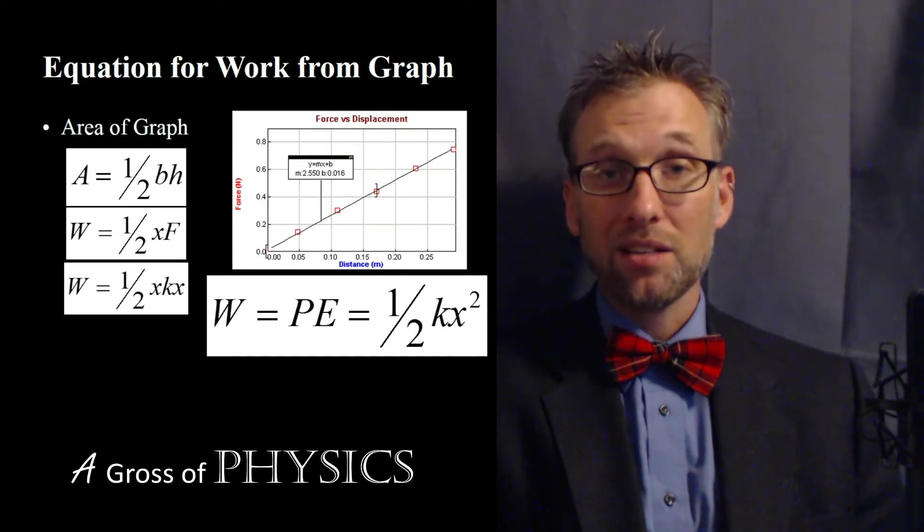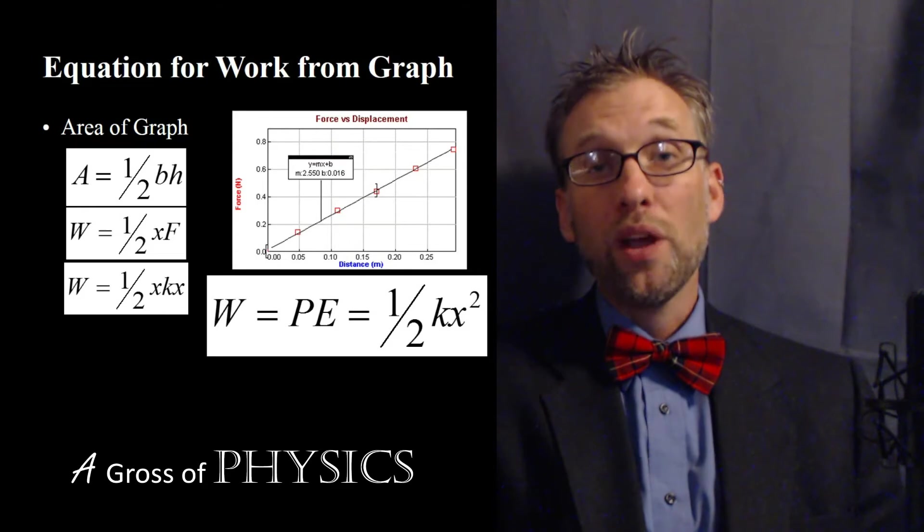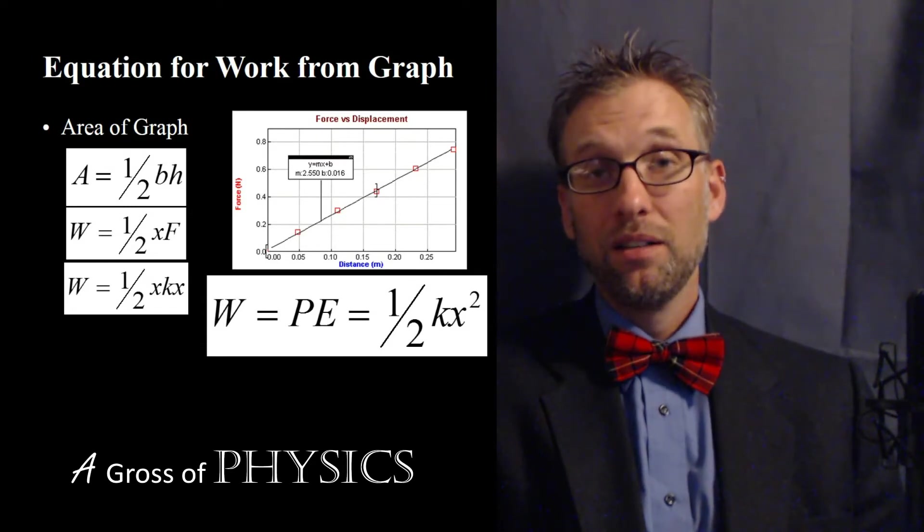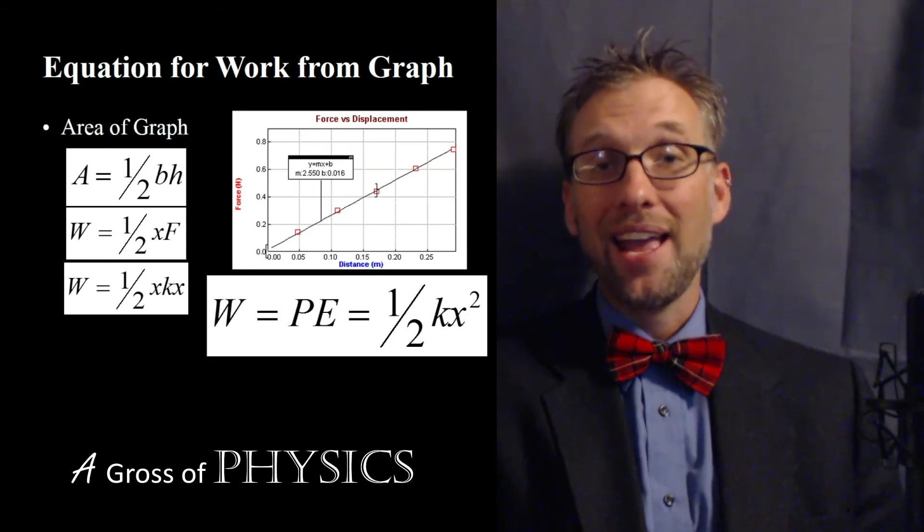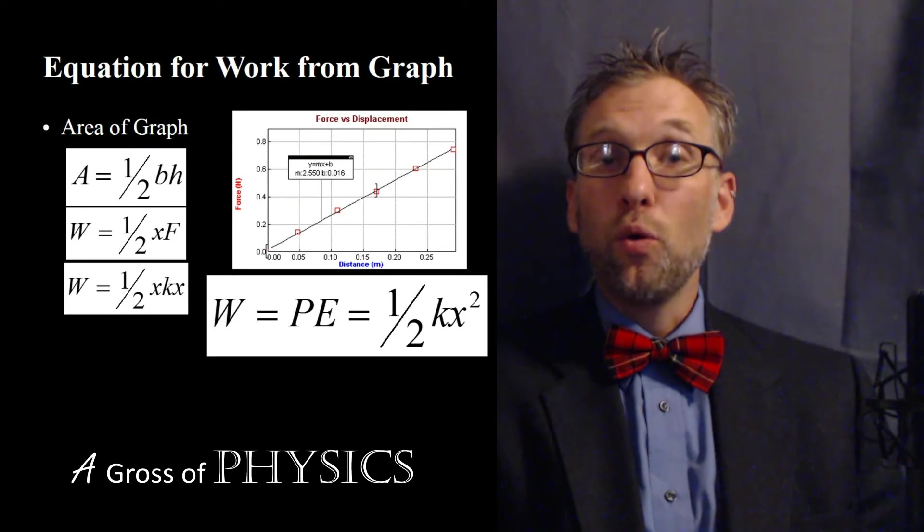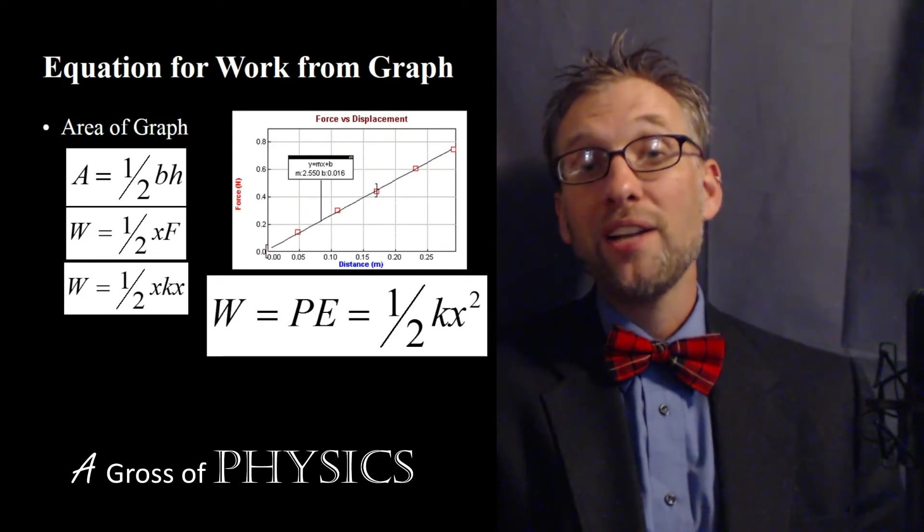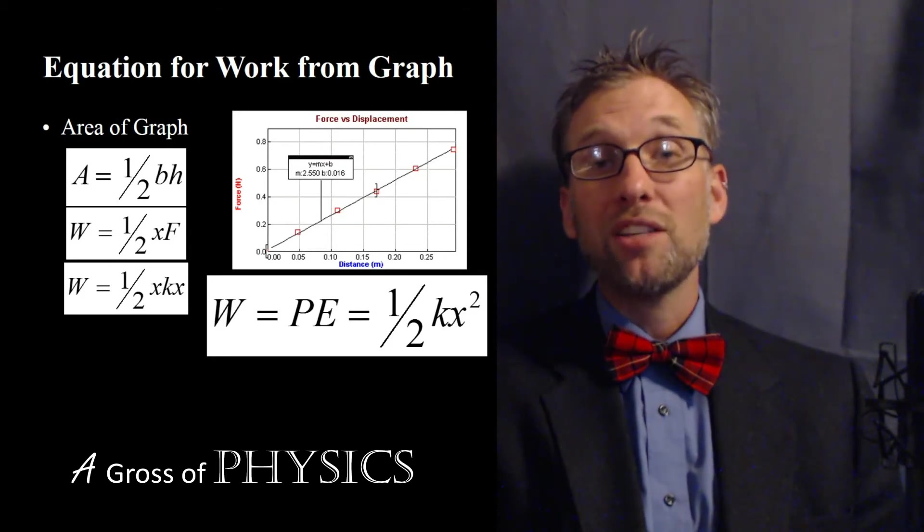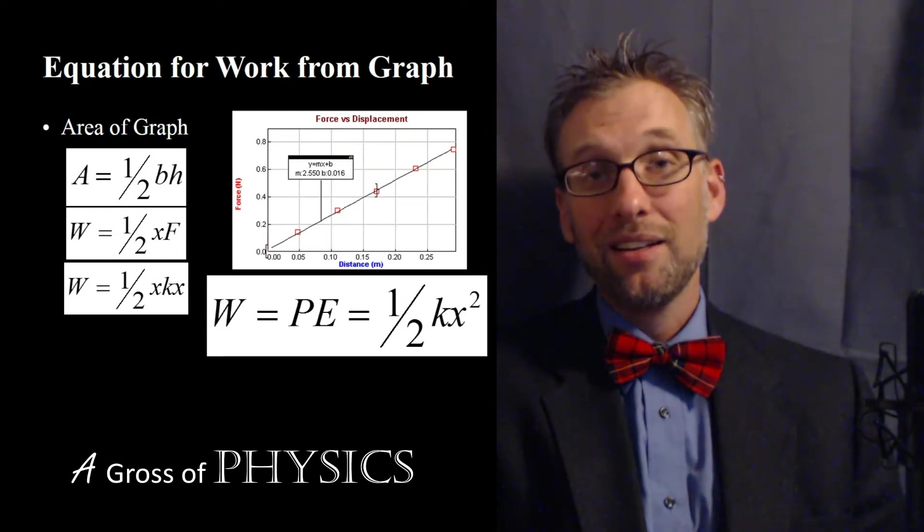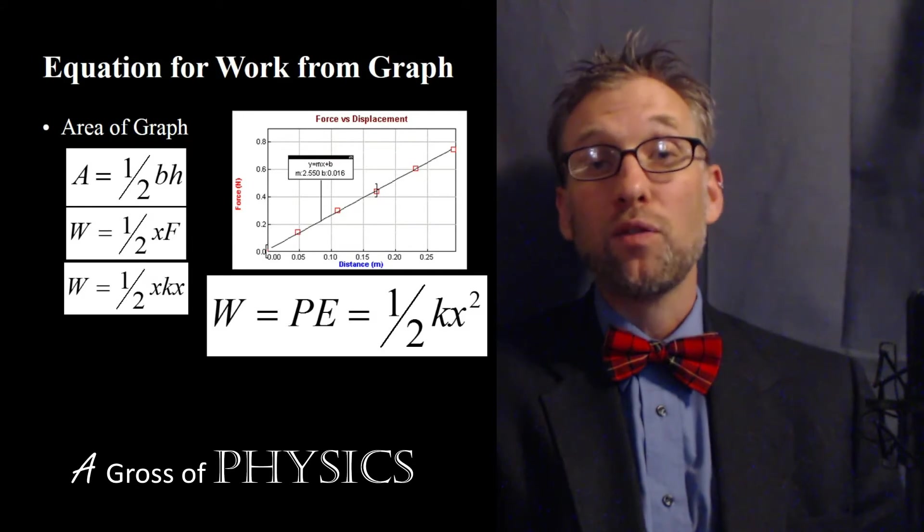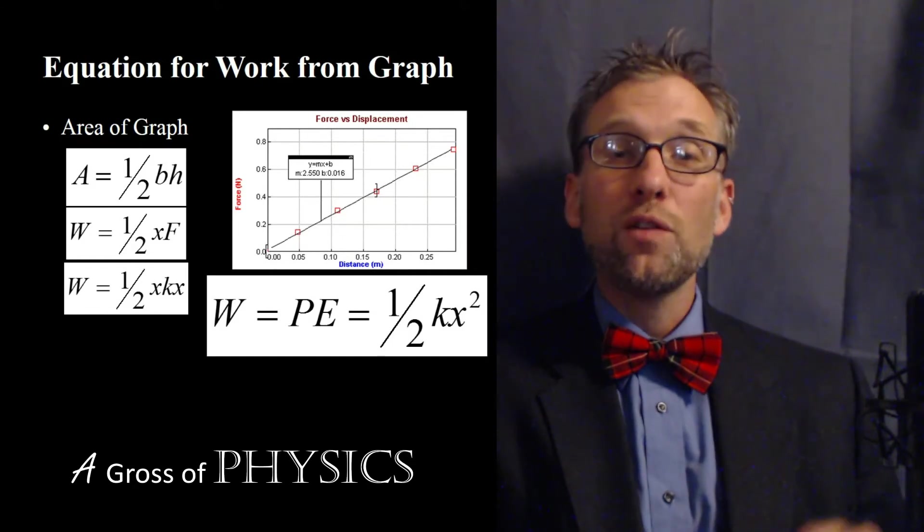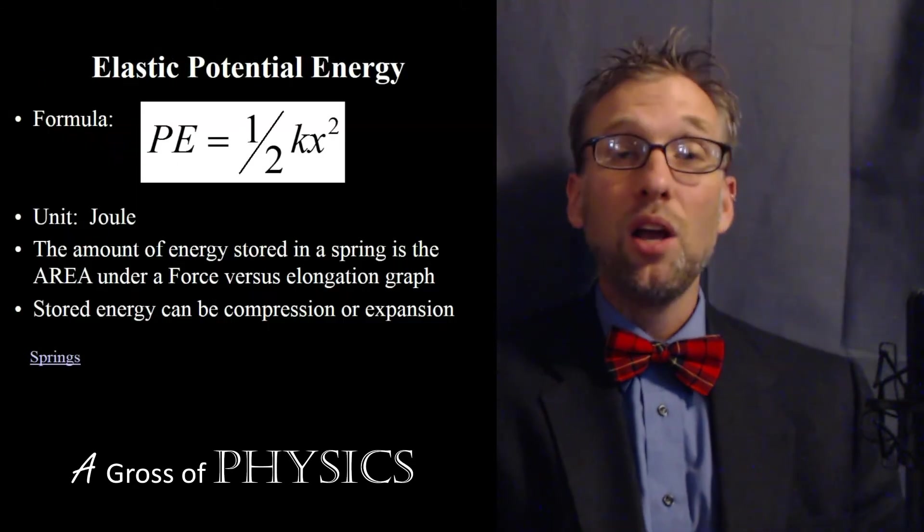Well, if we do one-half base, which is x, times the height, which is f, we have one-half xf. Well, if you remember, the force is kx. So if we have kx replace the f, we have one-half xkx. Now, in order to find the work done and the energy stored, we can rearrange that equation to be one-half kx squared. So the potential energy stored in a spring is based on one-half because it's not constant. And it's based on x squared because we have the x from the base and then the x that's already part of the f term.